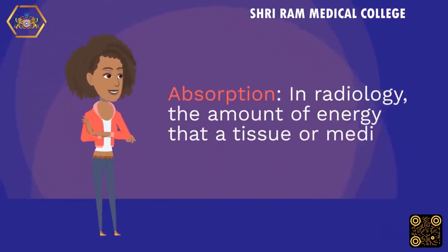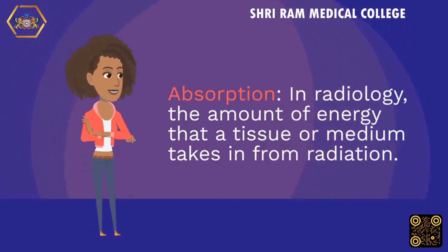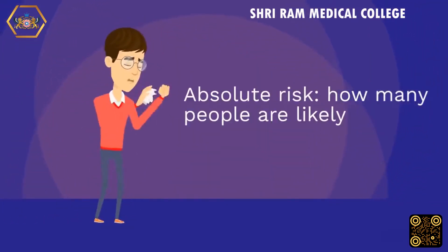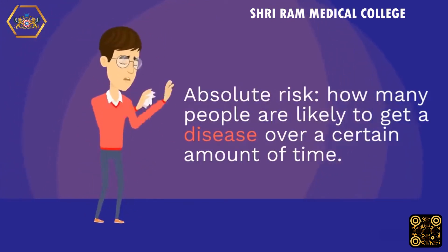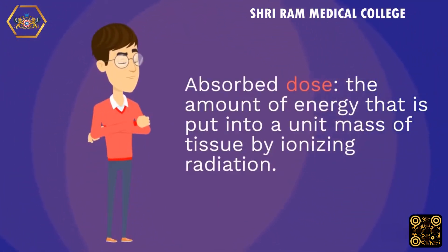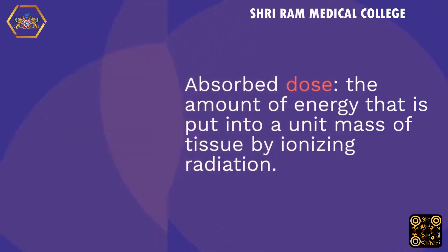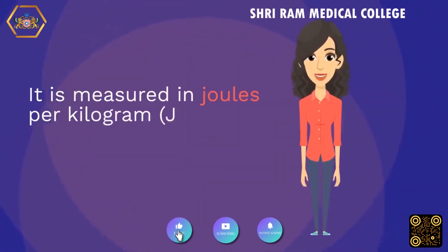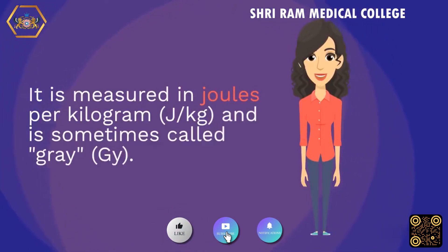Absorption: in radiology, the amount of energy that a tissue or medium takes in from radiation. Absolute risk: how many people are likely to get a disease over a certain amount of time. Absorbed dose: the amount of energy that is put into a unit mass of tissue by ionizing radiation. It is measured in joules per kilogram (J/kg) and is sometimes called gray (Gy).